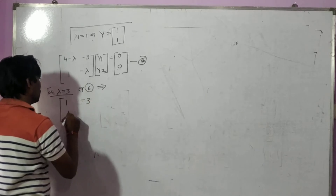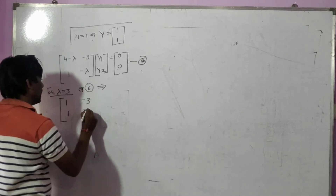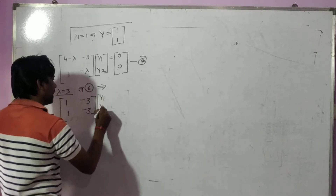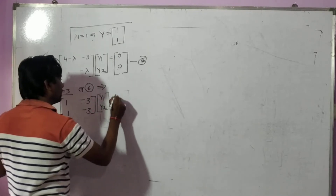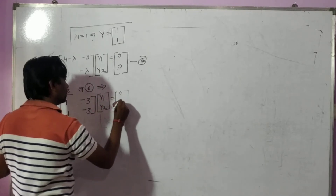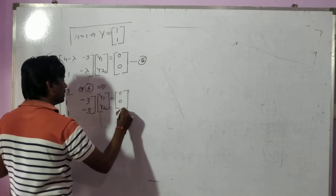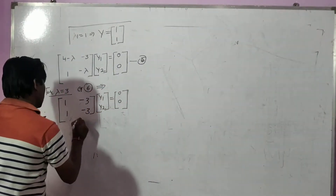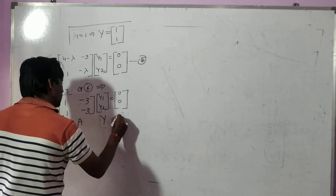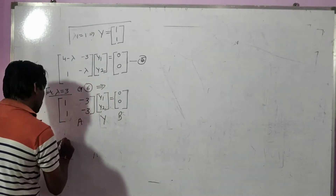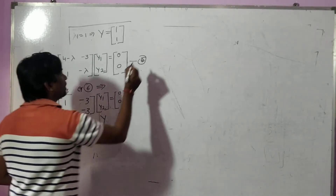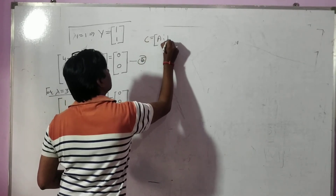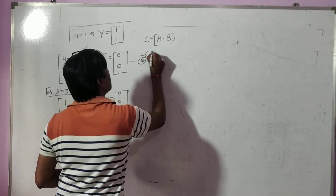This is what minus one, this is what one, and this is what minus three. We put in y1 here and y2 here, and this is exactly equal to zero zero. So here this is what a, this is what y, and this is what b. So combining these we get c equal to a as well as b.